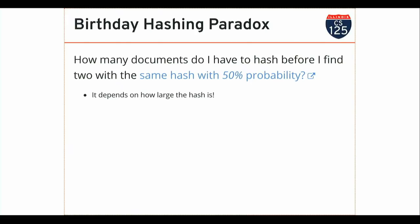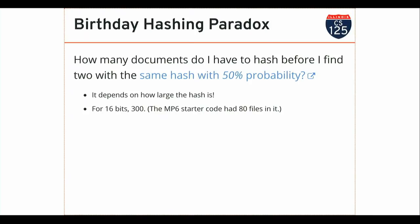As I make the hash bigger and bigger, the probability of collisions goes down because the hash space gets larger. If I have a 16-bit hash function — output is a number between 0 and about 65,000 — I only need 300 files before I have a 50% probability of a collision. Some of the starter code we give you for our MPs already has about 100 files in it, so 300 files is not very many. If I increase to 32 bits, now I can hash 77,000 files before a 50% collision probability — still not very many. My computer has about two and a half million files on it.